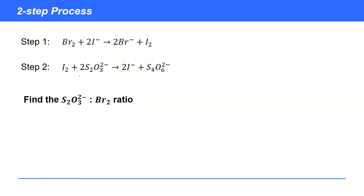The key is to find some kind of linking reagent or link species — something which arises in the first equation and then gets used up in the second equation. In this case, the quantity of bromine you have is going to determine the number of moles of iodine, and then the iodine gets used up in the second step. So iodine is what we call our link species, and I'll just put it in a square box here to show that.